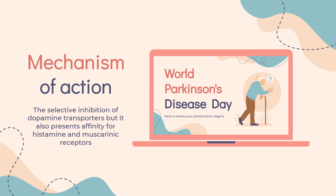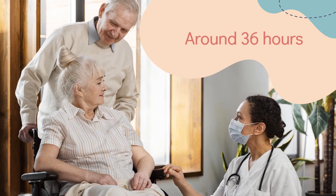Once bound, benztropine blocks the activity of the muscarinic receptors, mainly in the striatum. The increased advantage of benztropine lies in the antagonism of acetylcholine activity, which corrects the imbalance between dopamine and acetylcholine in Parkinson's patients. The elimination half-life of benztropine is very variable and is reported to be around 36 hours.